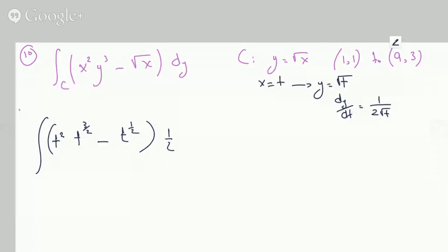We have t to the half raised, times t to the minus half dt. Since we called x t and x goes from 1 to 9, that just means that t is between 1 and 9, the same as x.